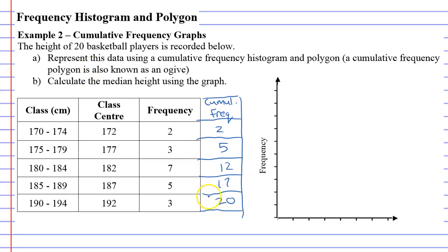Okay, so now we want to construct the cumulative frequency histogram. And we'll use our class centres each time. So, our class centre is 172. Our next class centre is 177, 182, 187, and 192. So, we've got a couple of points left over and that's fine.